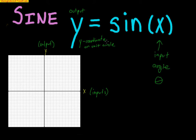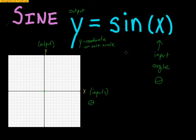What sine does is it allows us to analyze that angle and it spits out the y-coordinate on the unit circle. Sine is a ratio of y divided by r, but that y and r come from the unit circle. When the radius is 1, we just get the y-coordinate from the unit circle. So our inputs are angles, meaning the x-axis turns into an axis of angles in radians, and the y-axis represents our outputs.